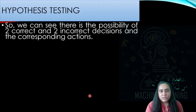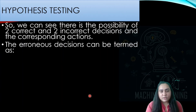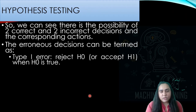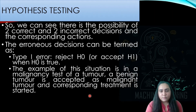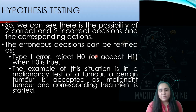The two erroneous decisions are termed Type 1 error and Type 2 error. Type 1 error occurs when you reject the null hypothesis — that is, you accept the alternative hypothesis — even though H0 is actually true.